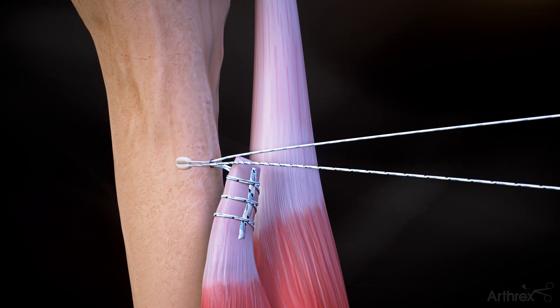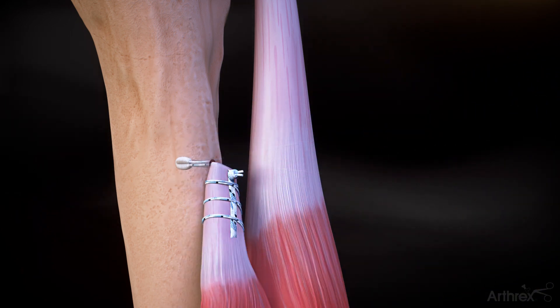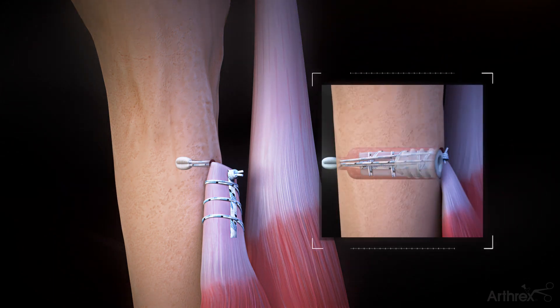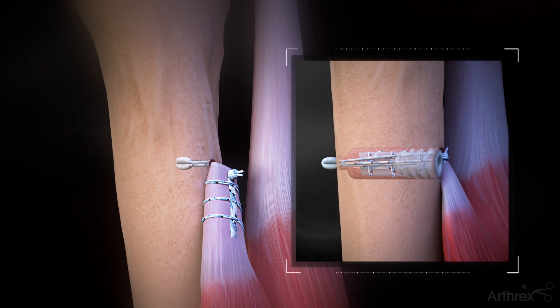Use the tension slide technique to reduce the tendon onto the bone. Pass one limb back through the tendon and tie a knot to complete the repair. The fiber-tack button can also be implanted bicortically for an inlay repair in conjunction with a tenodesis screw.